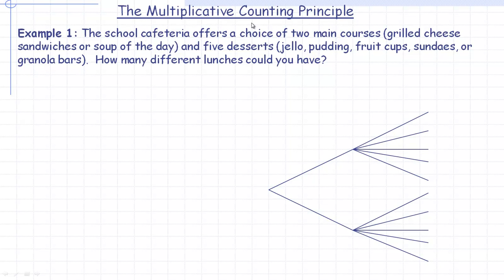In this video we'll take a look at something called the Multiplicative Counting Principle — it's really an organized way to count things that are made up of two or more parts. We'll start with an example, and I'll show you how to solve it using a listing method, the Multiplicative Counting Principle, and something called a tree diagram.